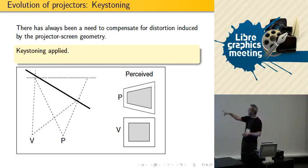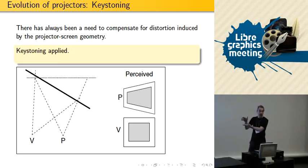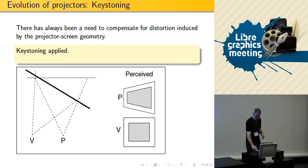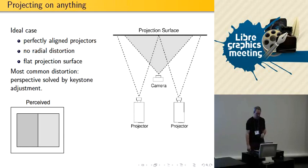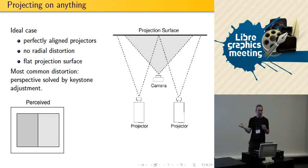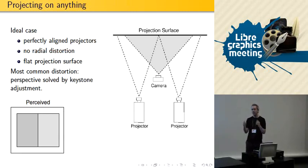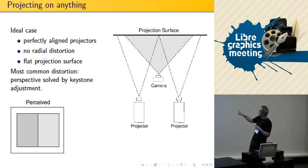When you apply a keystone, you can make the image align with whatever you want to make the viewer happy. You don't want to make the projector happy — you want to make the viewer happy. That's important. When we go to multiple projectors and want to make a big image, it's like keystoning but a little more difficult because we need to align things properly.